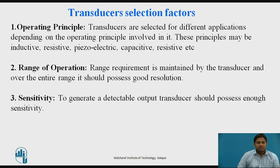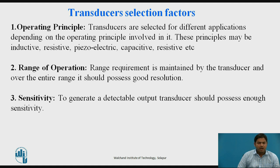The second selection factor is the range of operation. The transducer should operate over a wide range. For example, a temperature transducer should have a wide temperature range, since different commercial environments and geographical locations have different temperature ranges. So the range of operation for the particular transducer should be high.